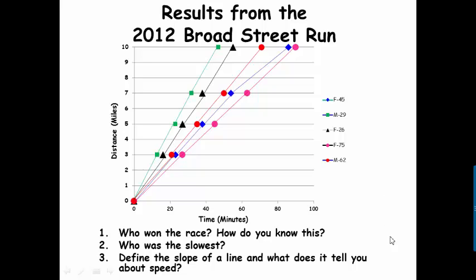And so my questions are, who won the race? And to follow that up, how do you know this? Alright, typically, whoever ran the race ran the ten miles, which everybody did, but in the shortest amount of time. Okay? So the 29-year-old male ran ten miles in the quickest time, so they won the race.